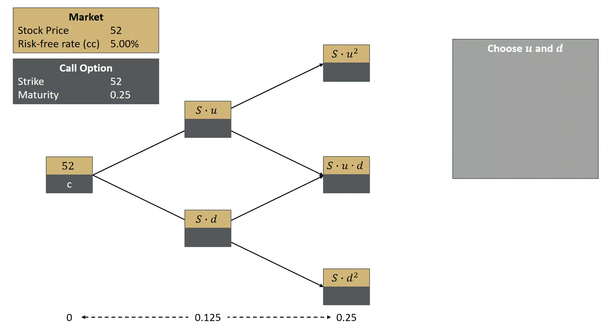Now, what I'd like to do is choose U and D so that I end up at 55 and 49. So S times U squared is 55, and S times D squared is 49. You can see we get to the S times U squared by going through the node at S times U. If you go up from S times U, you end up at S times U squared. If you go down, you end up at S times U times D.